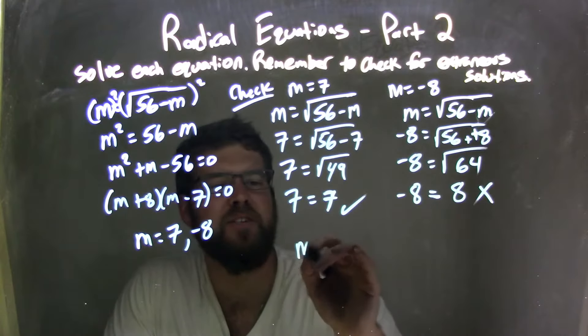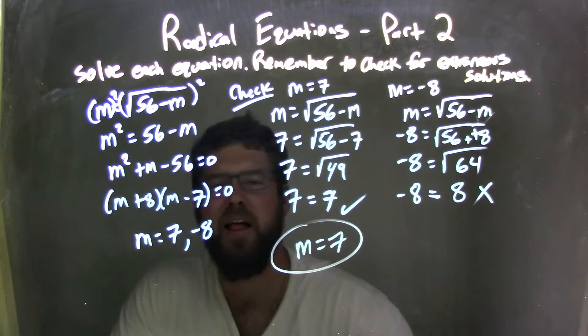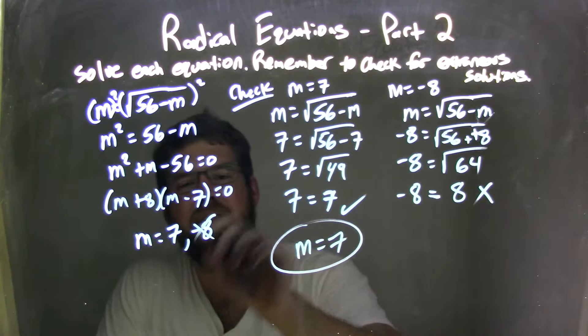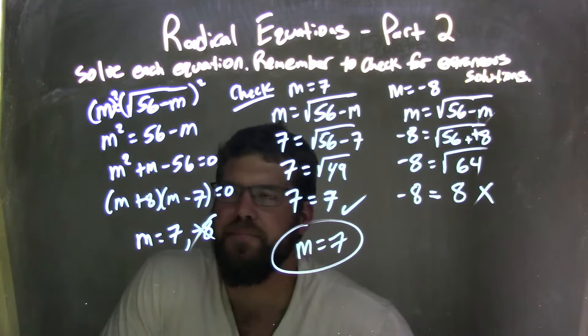So our only true solution here is m equals 7, and there we are. It's the only one we checked that it worked out. Don't need that negative 8. He's not a good friend.